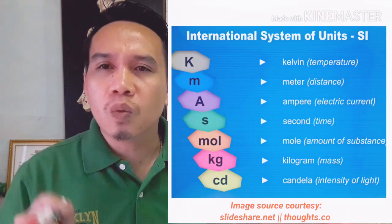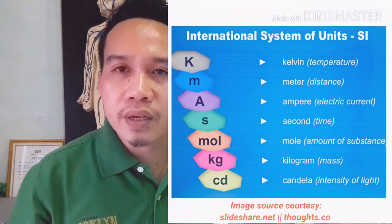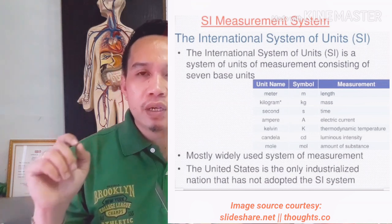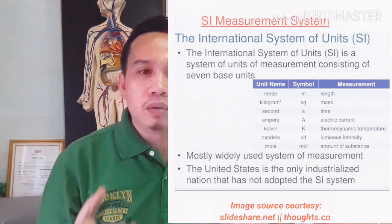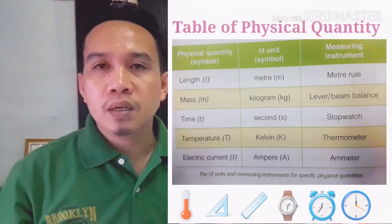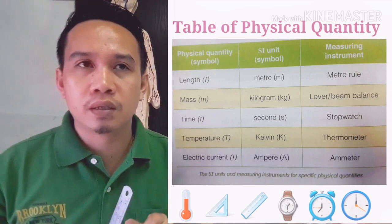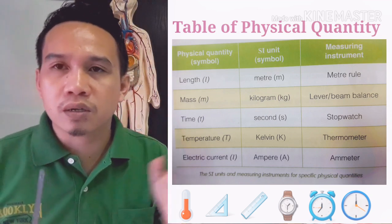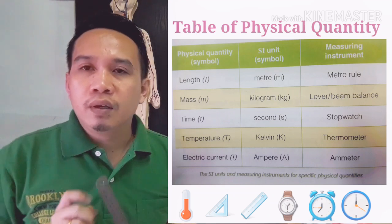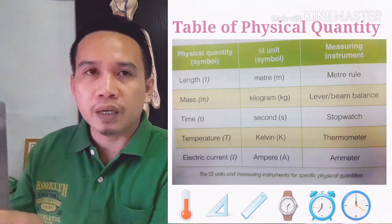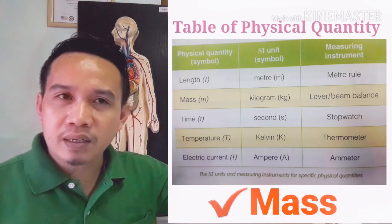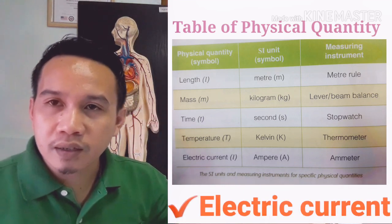We learn basic skills in measuring, counting, and problem solving. Physical quantities are measured in SI units, or the International System of Measurement. SI units play an important role when measuring physical quantities, and are useful to indicate the correct unit all over the world. The table shows physical quantities with their symbols, SI units with symbols, and the measuring instruments used. These physical quantities are length, mass, time, temperature, and electric current.